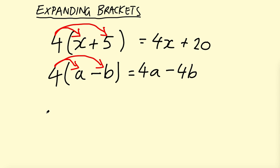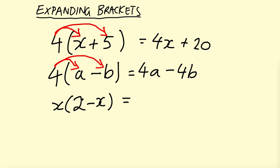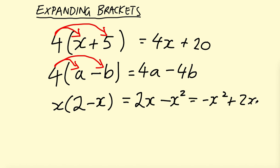You can even have an unknown in front of the brackets, like X, and then brackets containing 2 minus X. So X times everything inside: X times 2 — remember the number comes before the letter, so that's 2X — and then X times negative X gives negative X squared. We'd actually write that the other way around, so the answer is negative X squared plus 2X, because the squared term comes first.